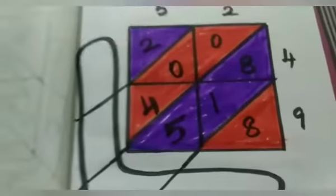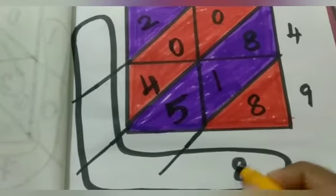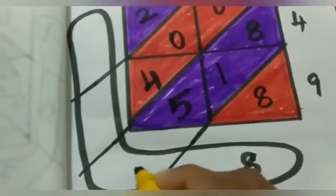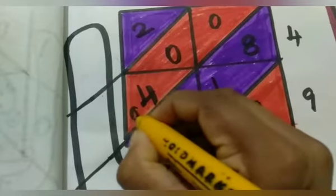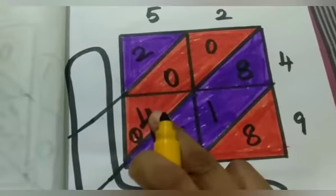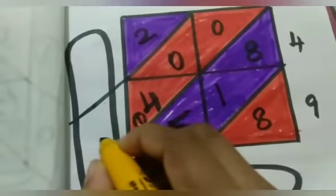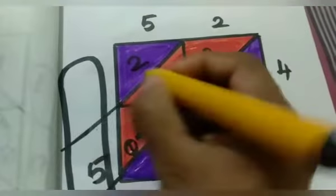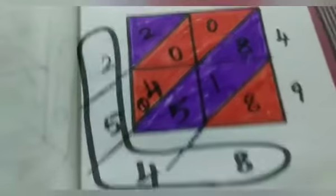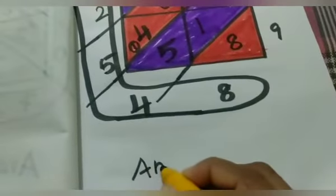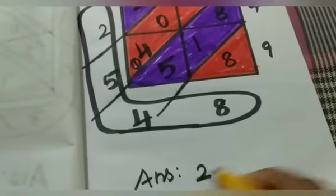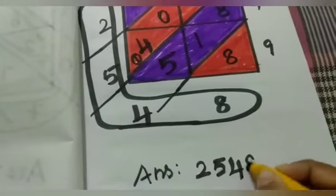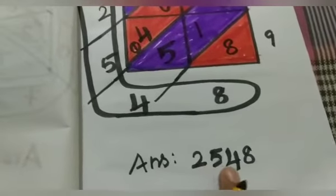Now we add. The 1-strip is 8. Next, add the 10-strip: 5 plus 1 is 6; 6 plus 8 is 14. So, 4 is here and 1 is carried over. Next: 4 plus 1 is 5; 5 plus 0 is 5; 5 plus 0 is 5. Then 1000-strip plus 2. So the answer is 2,548.